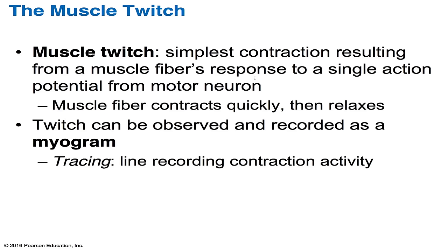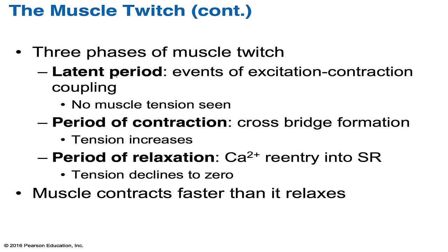A muscle twitch is the simplest contraction that results from a muscle fiber's response to a single action potential from a motor neuron. The muscle fibers contract quickly and then relax. We can observe and record a twitch as a myogram — a tracing that records the contraction activity. There are three phases of a muscle twitch: the latent period, where events occur during EC coupling and no muscle tension is seen; the period of contraction, where cross-bridge formation takes place and tension increases; and the period of relaxation, where calcium returns to the sarcoplasmic reticulum and tension declines back to zero. Muscle contracts much faster than it takes to relax.